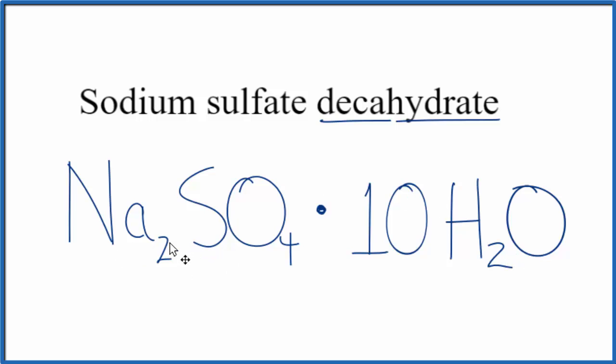So this is the formula for sodium sulfate decahydrate: Na2SO4·10H2O. You can think of this as sodium sulfate with 10 water molecules around it. This is considered the hydrate.